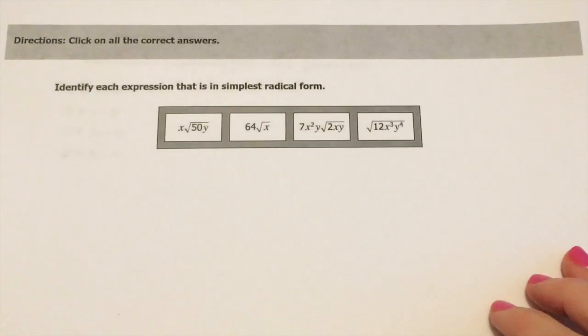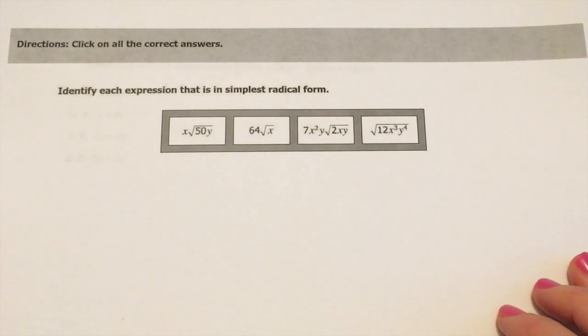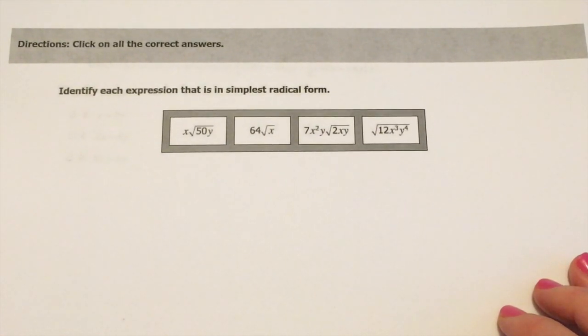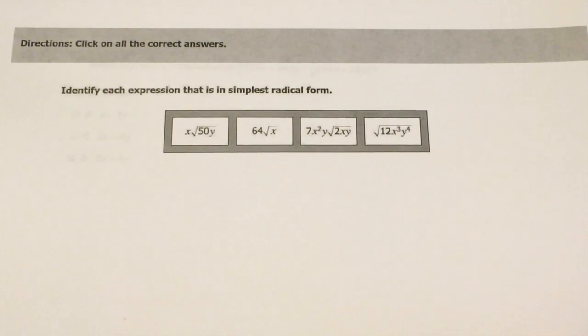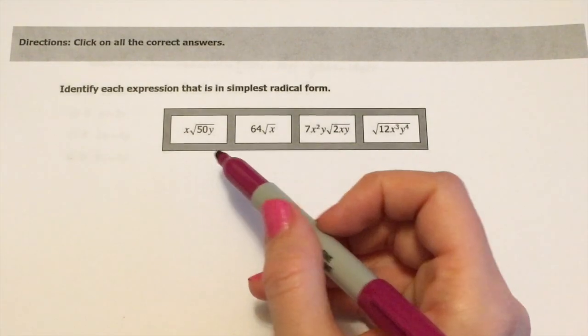All right, this one says identify each expression that is in its simplest radical form. What I'd probably do is just take and write each one of them down and see if I can simplify it anymore. A lot of times you really don't have to do that. You can kind of eyeball it, but I'm just going to start with this first one here.